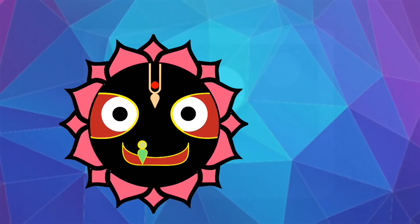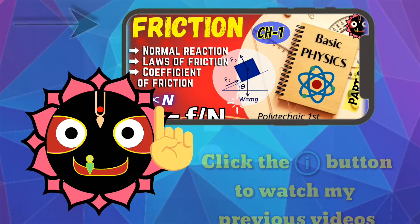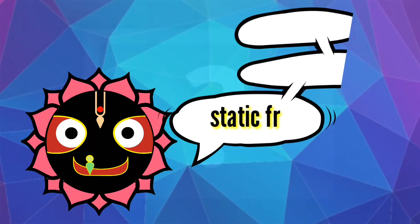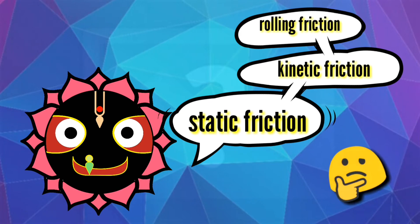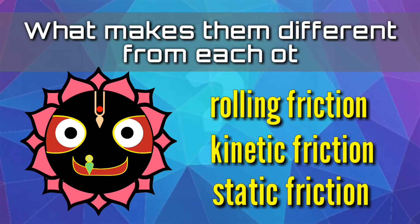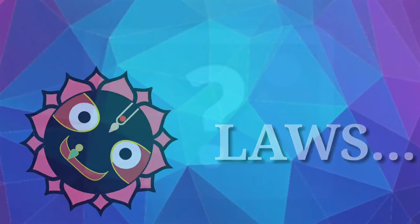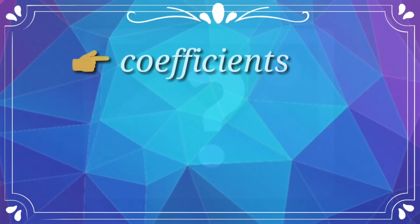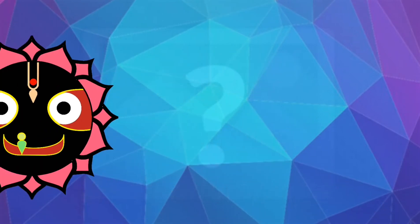Hello friends! In my previous video, we learned about normal reaction and loss of friction. I hope you all remember different types of friction like static friction, kinetic friction, and rolling friction. But do you know what makes each type different from the others? It's all about different laws governing each kind of friction. In today's video, we are going to deal with the laws of each type of friction, their coefficients, and we shall also discuss the advantages and disadvantages of friction.